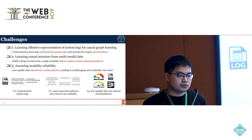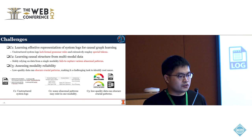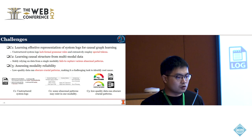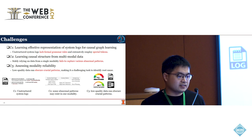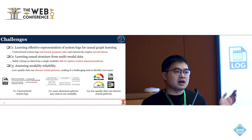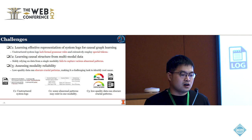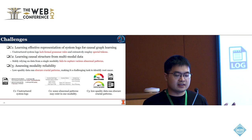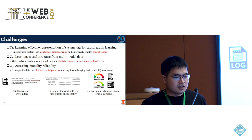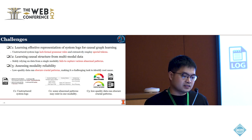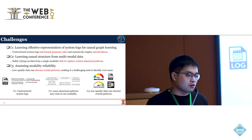This paper aims to address the following three challenges. First, we observe that system logs are unstructured due to the lack of formal grammar rules and extensive employment of special tokens. Second, some abnormal patterns may only exist in a single modality, but many existing methods solely rely on a single modality, and thus fail to capture various abnormal patterns. Third, low-quality data can also obscure crucial patterns, making it challenging to identify root causes. The question is: how can we make robust root cause identification in case of a low-quality modality?